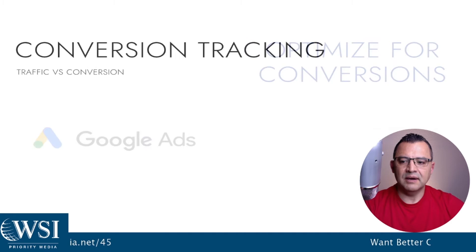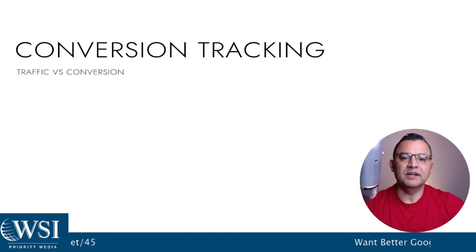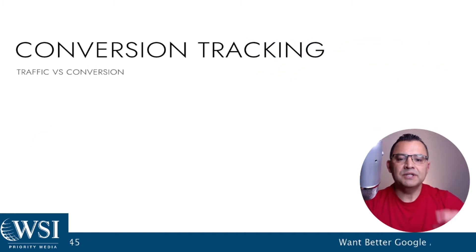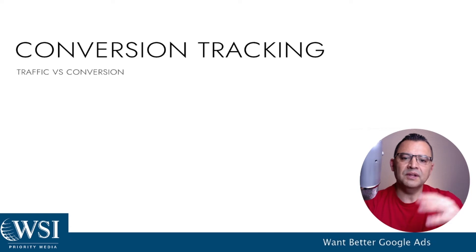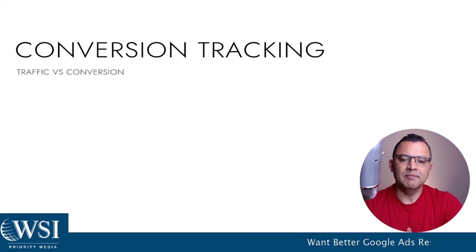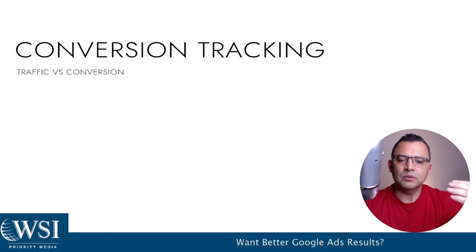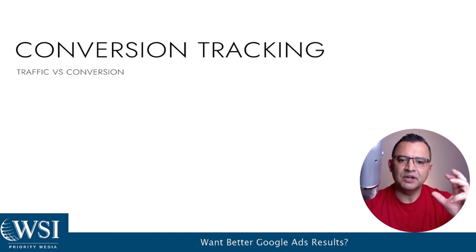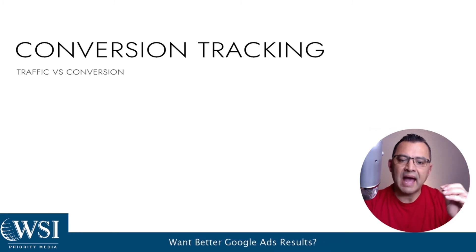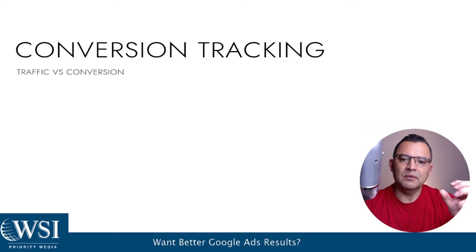One of the things I want to talk to you about is your conversion tracking. Make sure that you're really watching things holistically. When you're in your Google Ads campaigns, you're always watching your impressions, your clicks, your click-through rate. Those things are really important — they're the things you're going to be optimizing for conversion in your Google Ads interface. They're ad-related: what's going on on the front end with your ads and your keywords.